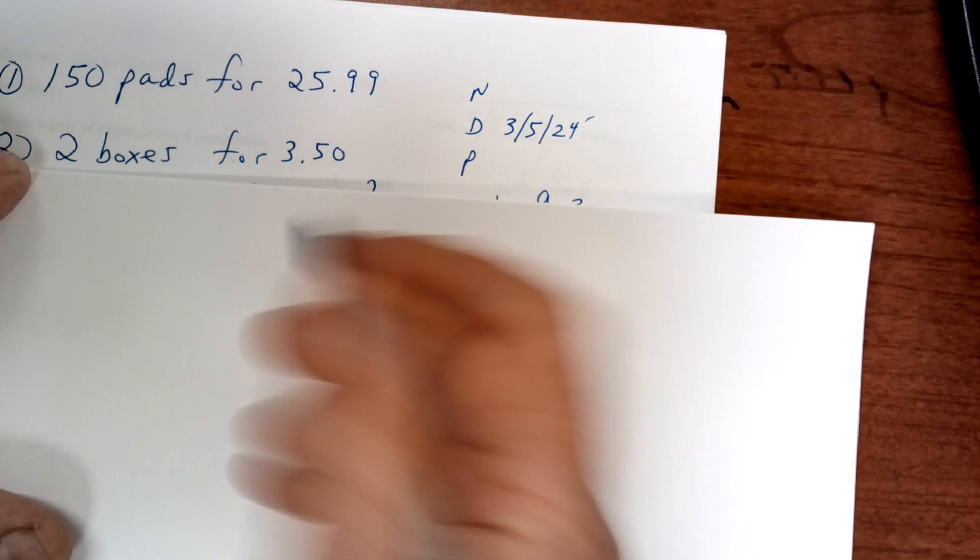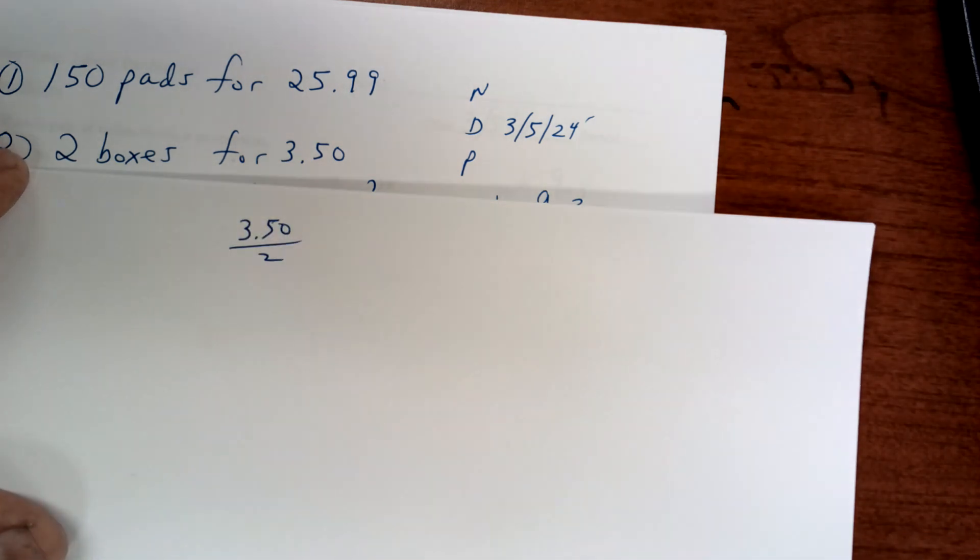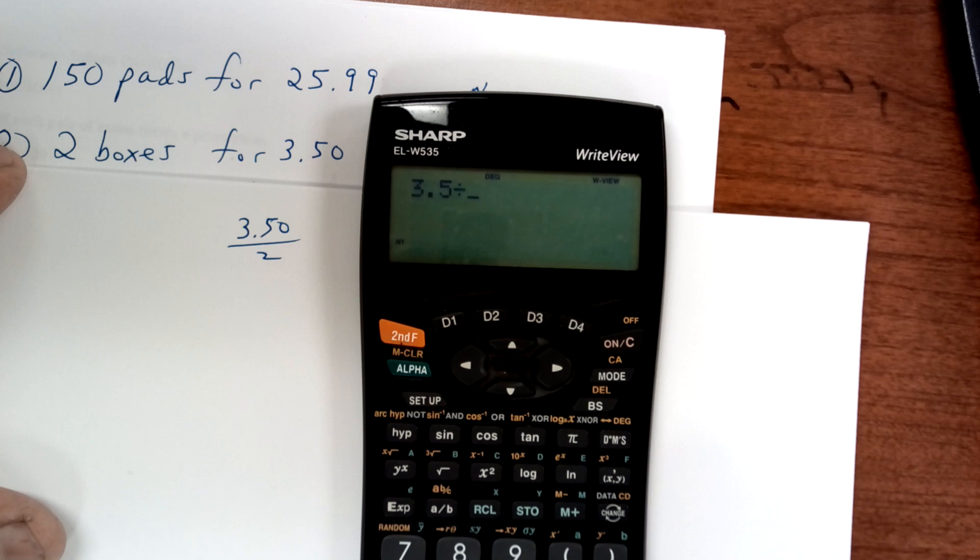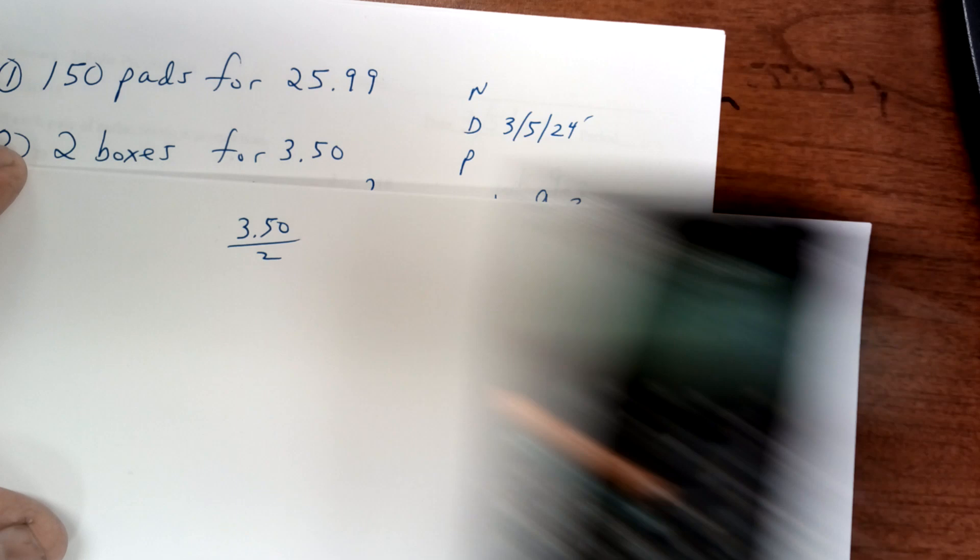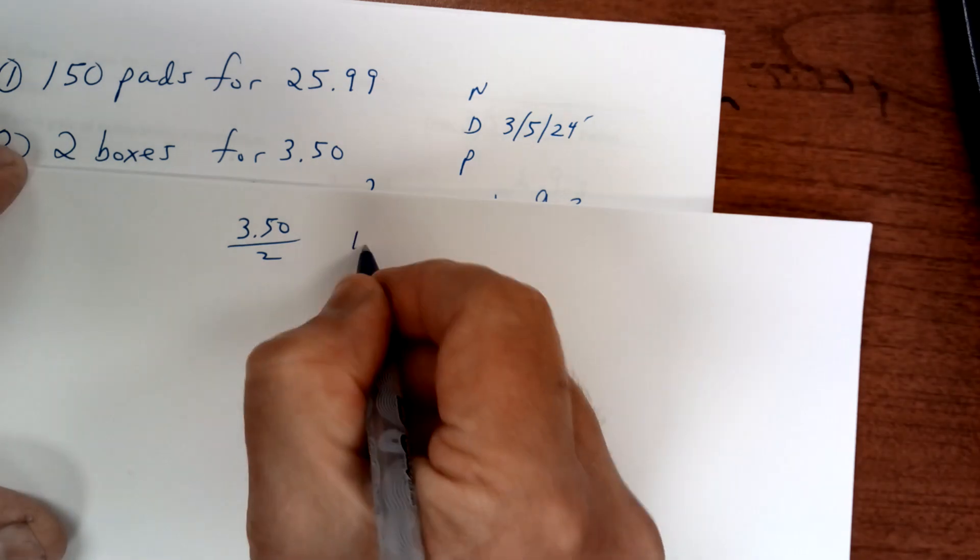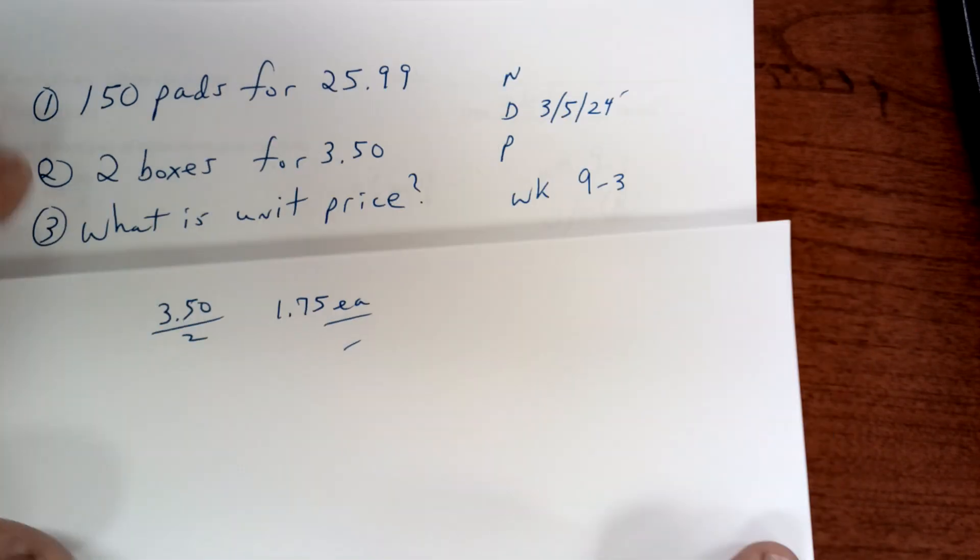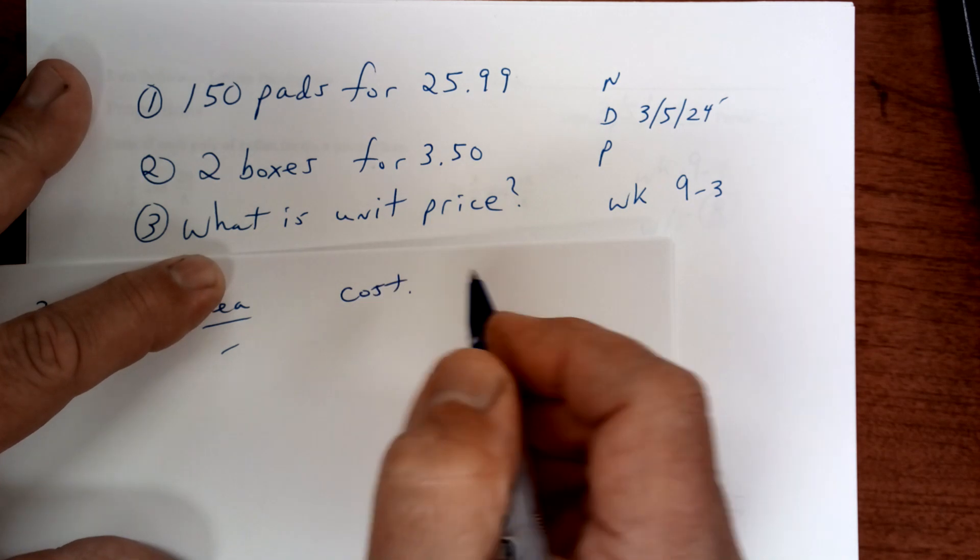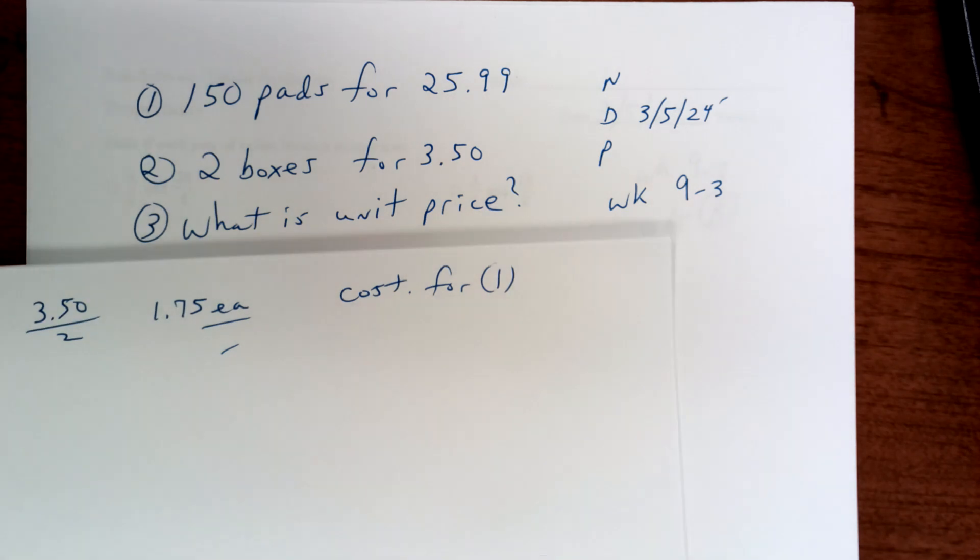This one here, you put the money on top divided by two and you cut it in half. I think it's $1.75, but let's check. $3.50 divided by 2 equals $1.75, so it's $1.75 each. What is unit price? Unit price is the cost for one item, so you can compare apples to apples and oranges to oranges.